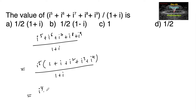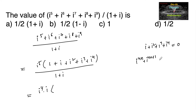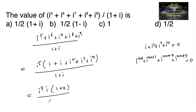i⁵ can be written as i⁴ times i, and we know that i + i² + i³ + i⁴ is equal to 0. In general, i^(4n) + i^(4n+1) + i^(4n+2) + i^(4n+3) always equals 0. So the numerator becomes 1 + 0, and since i⁴ = 1, we get i upon 1 + i.